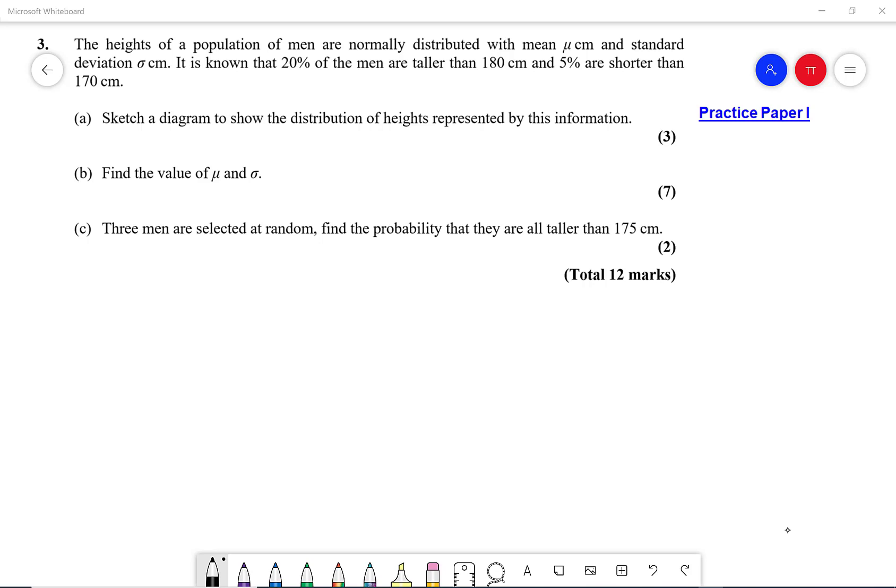It is known that 20% of the men are taller than 180 centimeters and 5% are shorter than 170 centimeters. Sketch a diagram to show the distribution of heights represented by this information. Find mu and sigma, and then three men are selected at random.